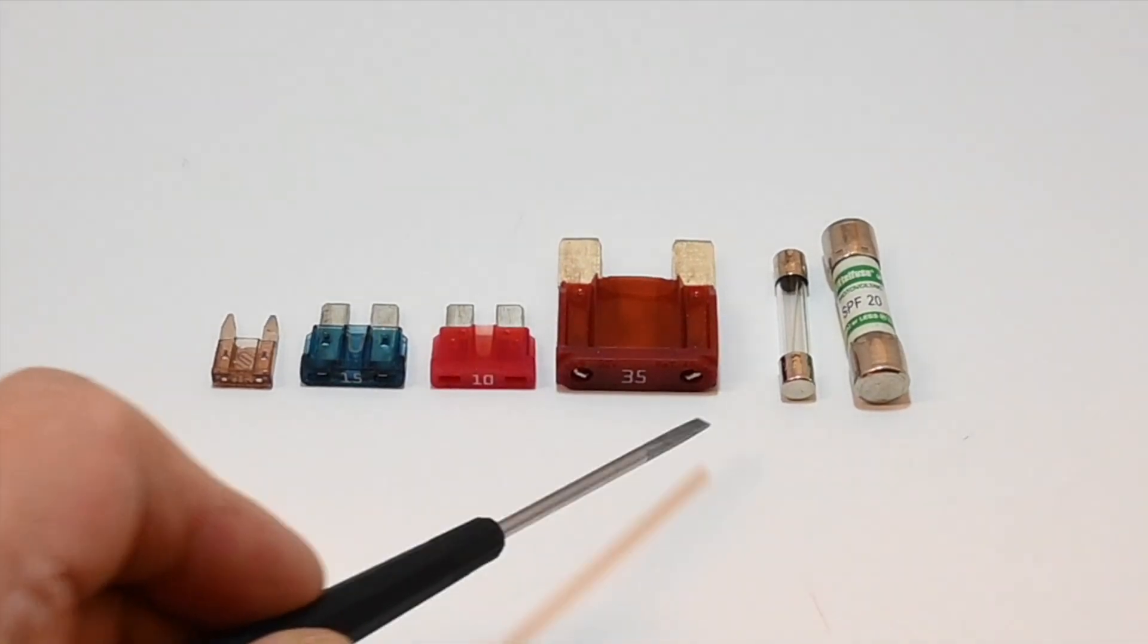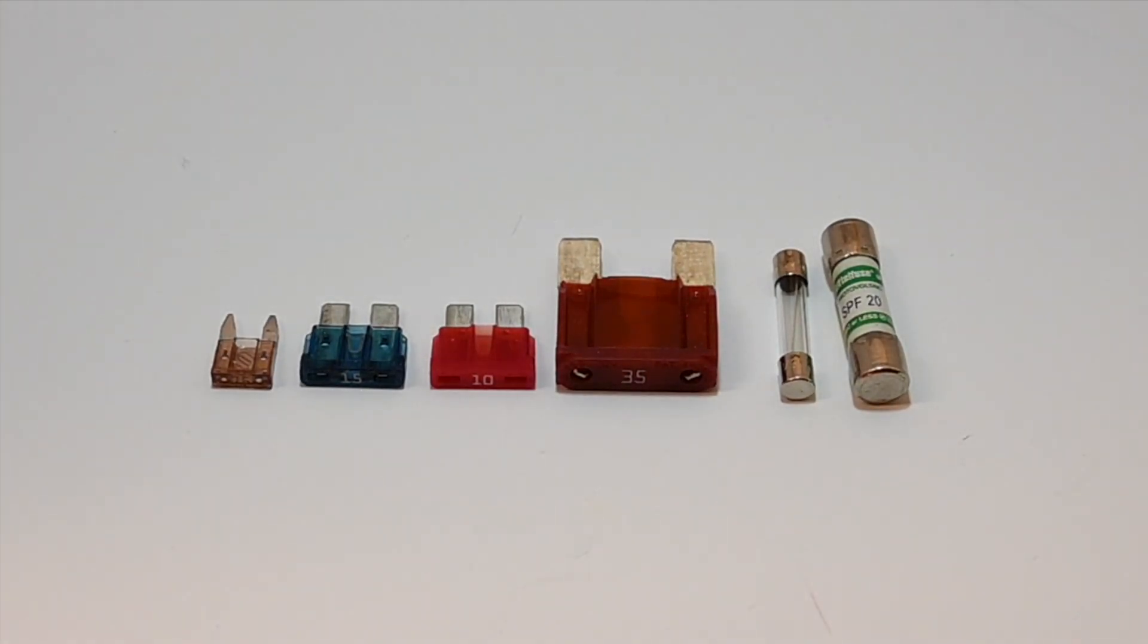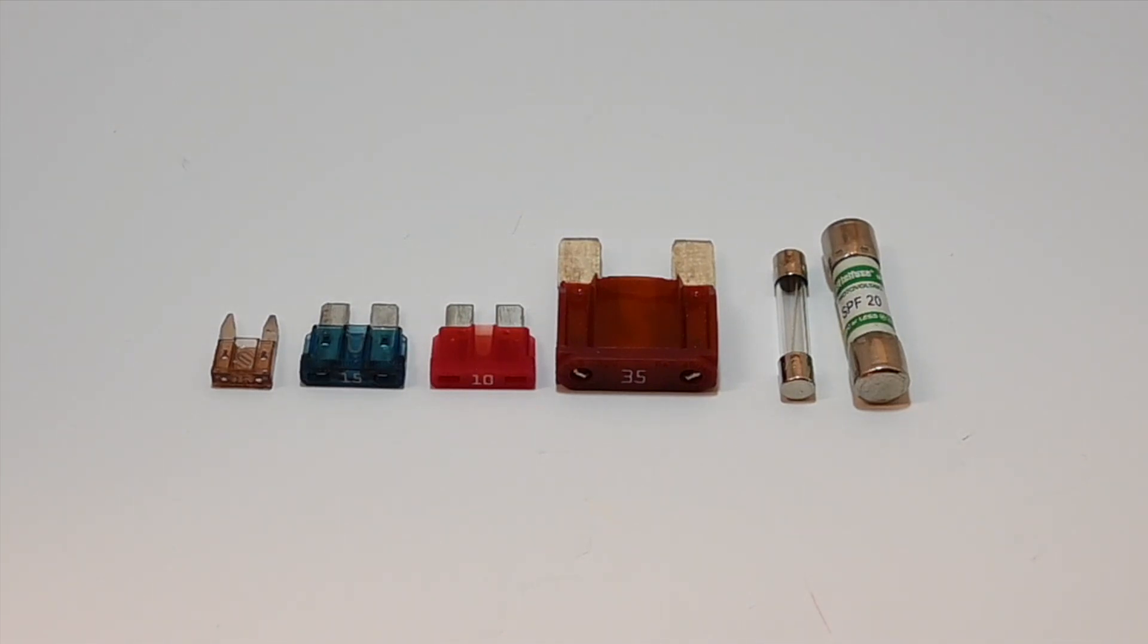The ATM and maxi fuses are typically found in equipment while the ATO and the ATC fuses are found in both equipment and distribution panels.